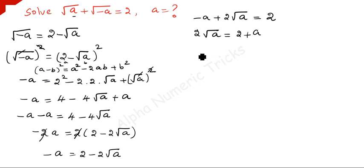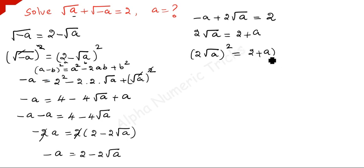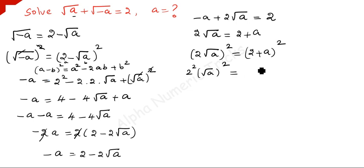Now squaring on both sides: 2 square root of a, the whole square, equals 2 plus a, the whole square. On the left, 2 squared times square root of a squared equals 4a. On the right, apply the (a plus b)² formula.